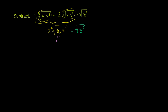So 81, if we do prime factorization, is 3 times 27. 27 is 3 times 9, and 9 is 3 times 3. So 81 is exactly 3 times 3 times 3 times 3. So 81 actually is 3 to the 4th power, which is convenient because we're going to be taking the 4th root of that. And then x to the 5th we can write as a product: 3 to the 4th power, times x to the 4th power, times x. x to the 4th times x is x to the 5th power. And I'm taking the 4th root of all of this.